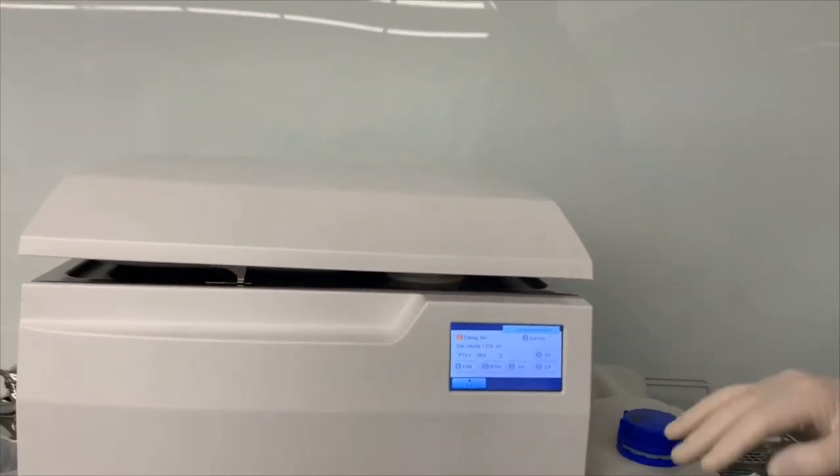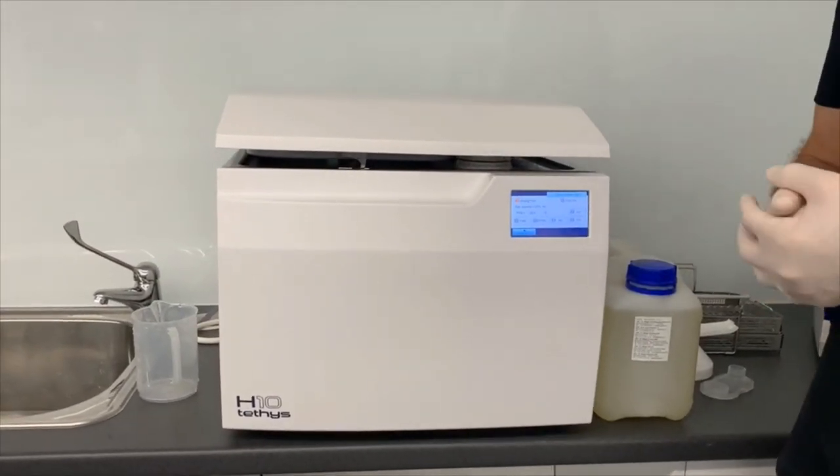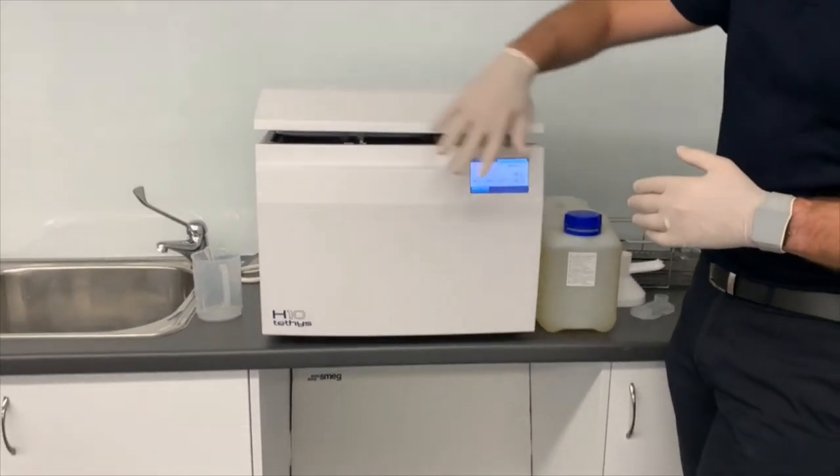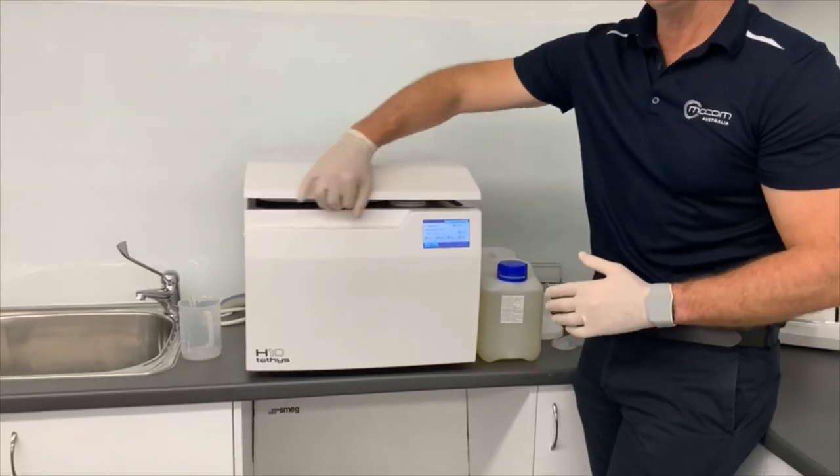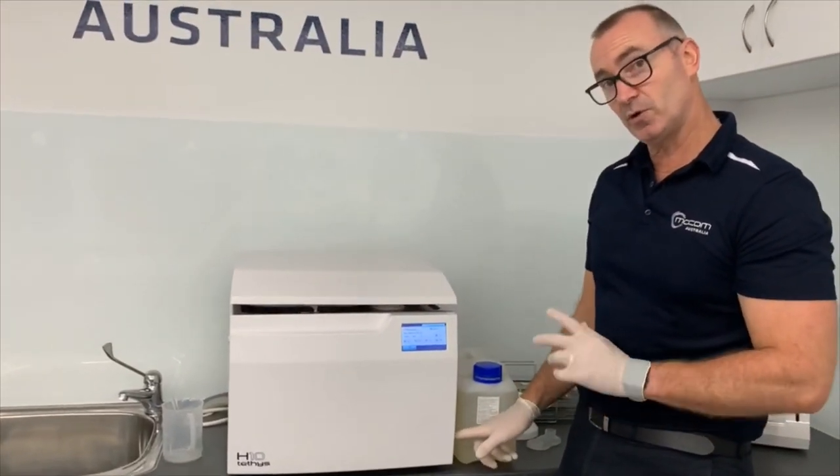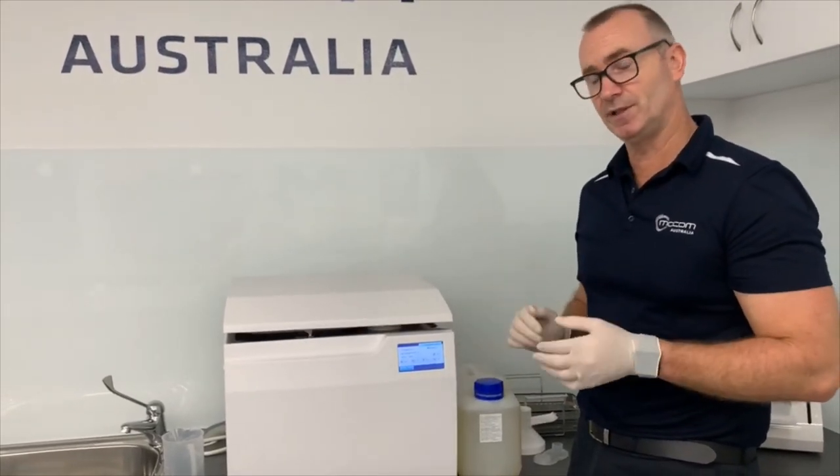After that, you would give the unit a good wipe down with a disinfectant. We use an alcohol-based wipe on all of the high traffic areas. So the touch screen, the front of the unit, the lid, the under lip of the lid, the recess for the stop, the on-off button. So we're sanitising the outside of the unit.